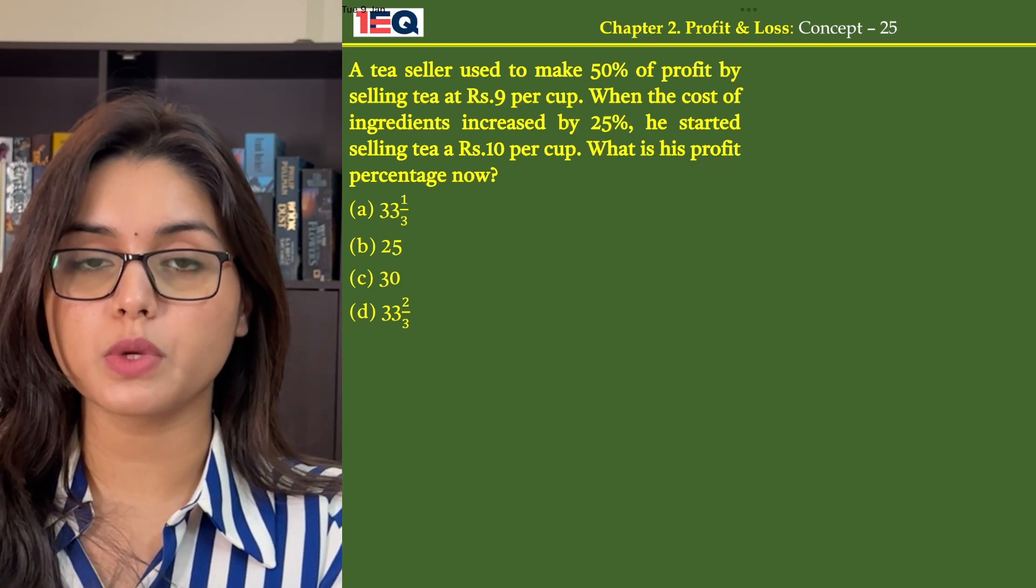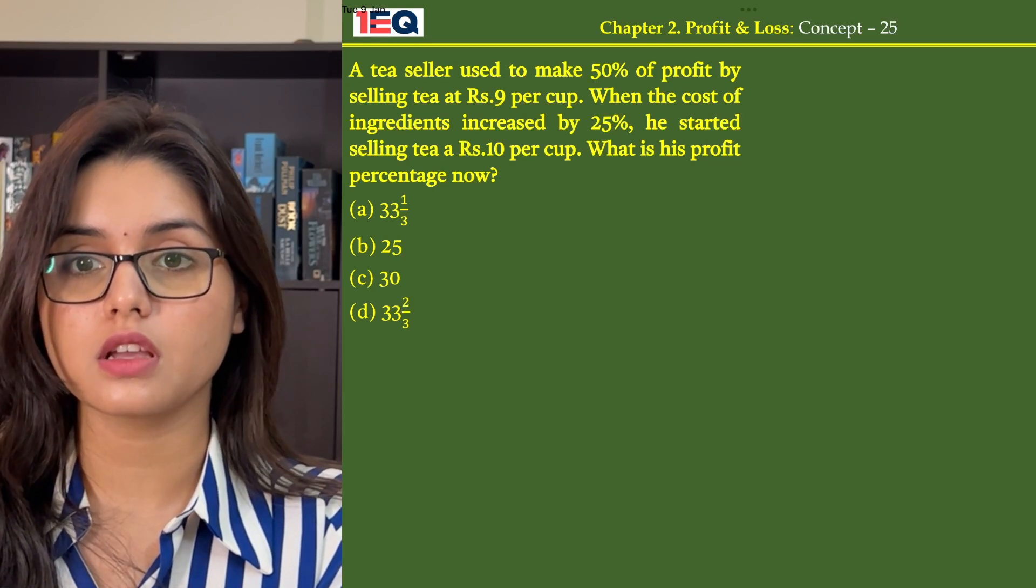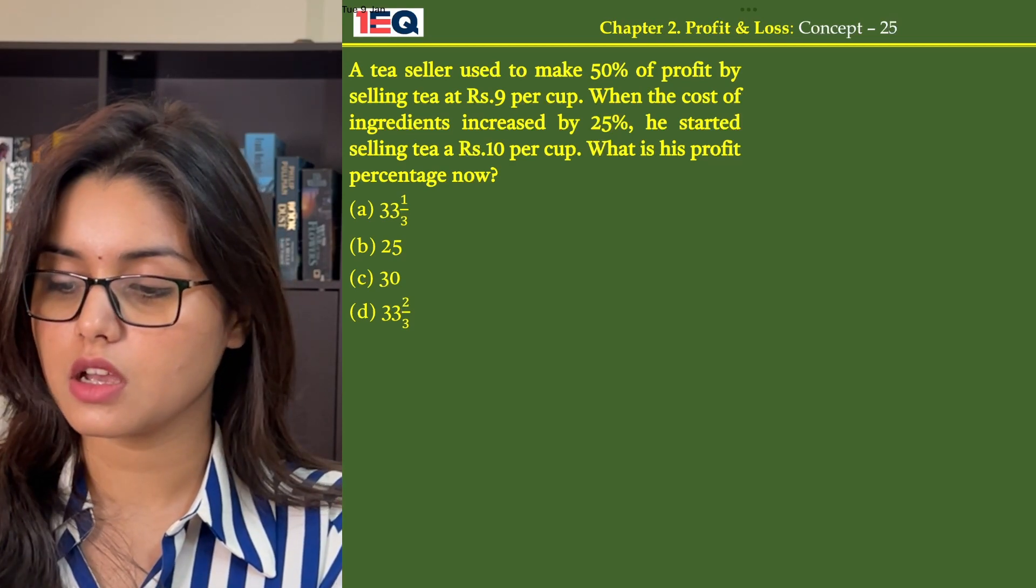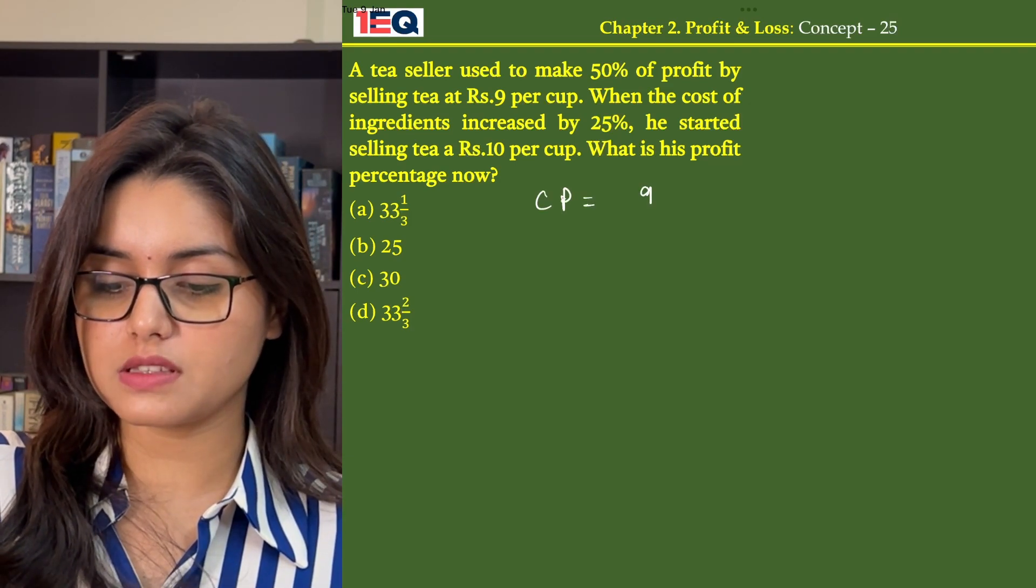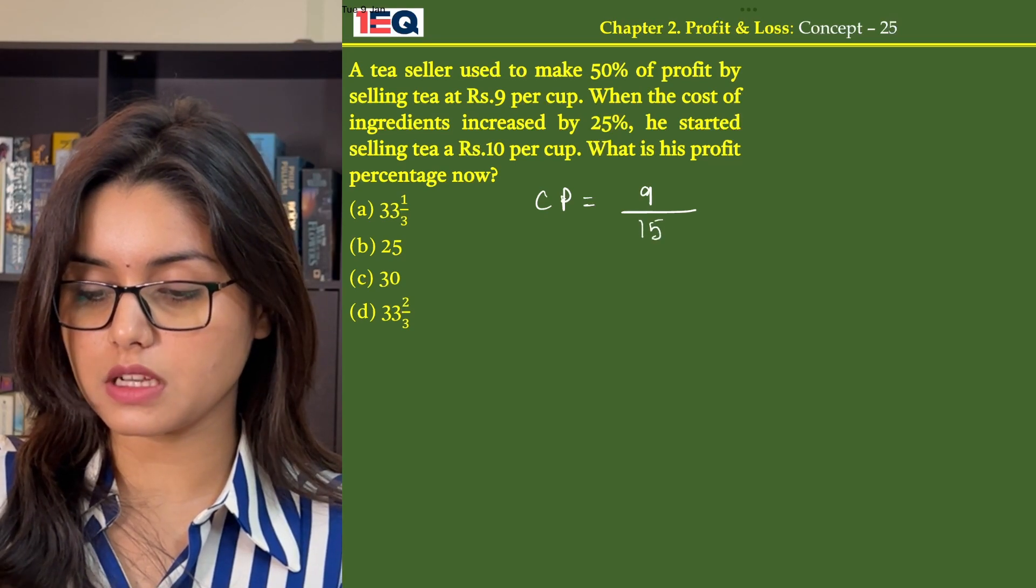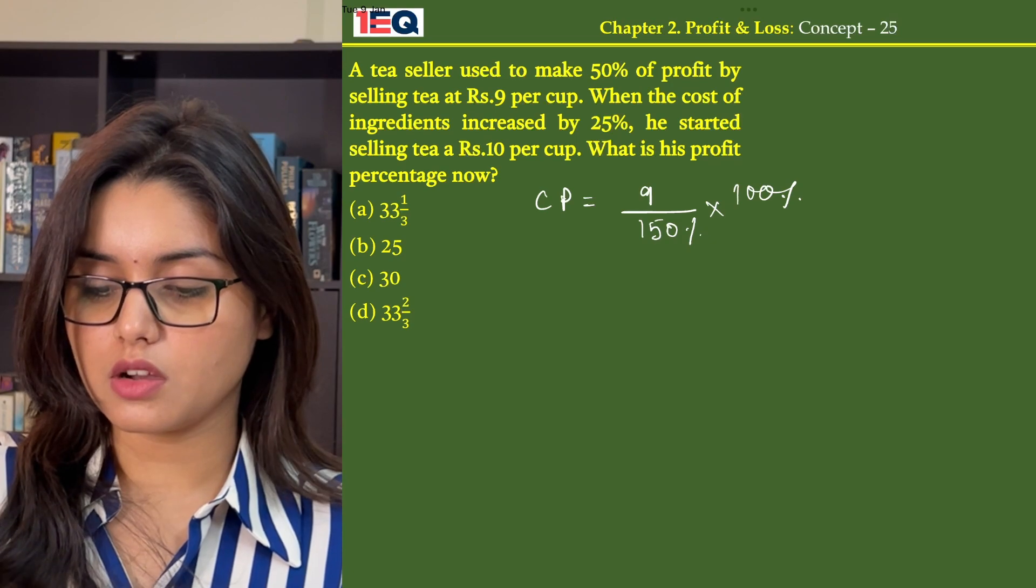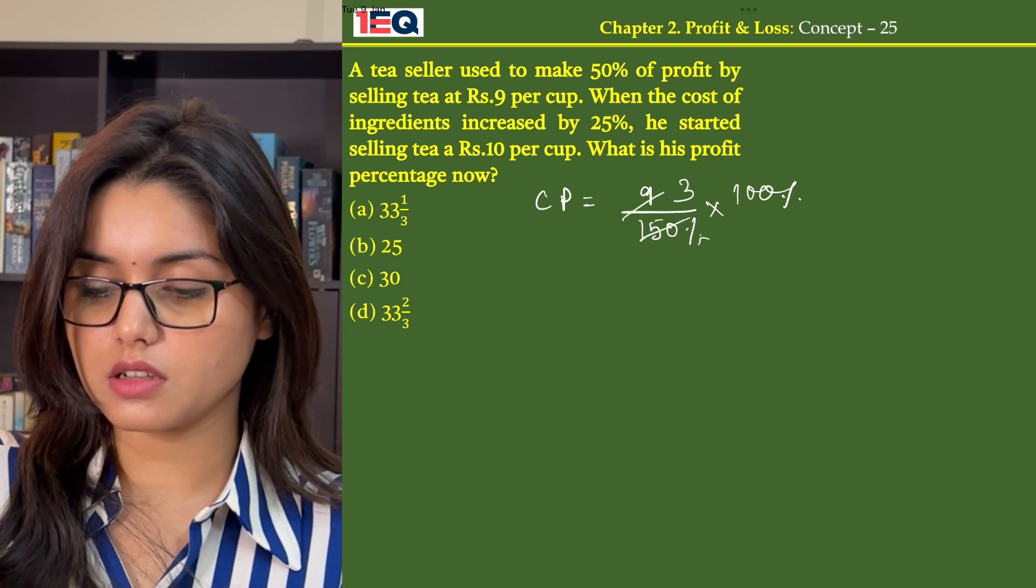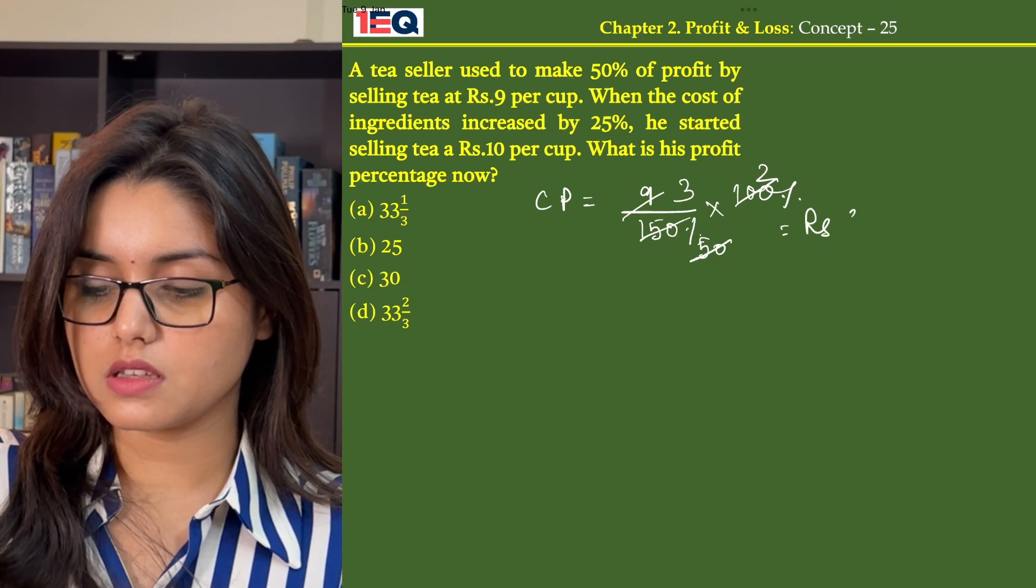In the given question, when the tea seller was selling tea at Rs. 9 per cup, he earned 50% profit. His cost price then becomes Rs. 9 by 1.50, that is 150% into 100%. On dividing by 3, we get 3 into 2, which is Rs. 6.